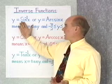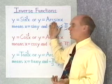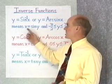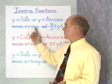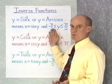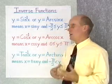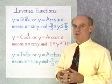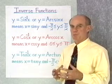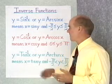When you see expressions like this — y is the inverse sine of x, or y equals arc sine of x — what they mean is that x is equal to the sine of y, and y is between negative 90 degrees and positive 90 degrees if you're working in degrees, or between negative pi over 2 and positive pi over 2 if you're in radians.